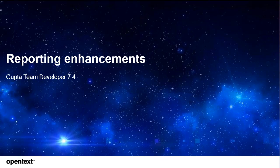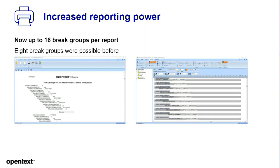From programming, let's go to reporting. This is what our customers have requested — more reporting power. We know that you are using Report Builder a lot to create quite complex reports. We've had issues where people were running out of memory after around 1,600 report runs, and we have fixed a number of things over the past years to make this a very robust reporting tool. And now we are adding eight more break groups, so we have up to 16 break groups available in Team Developer and Report Builder reports.